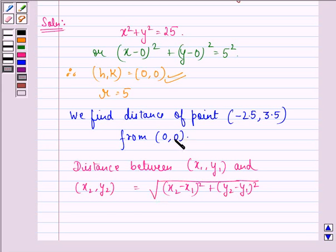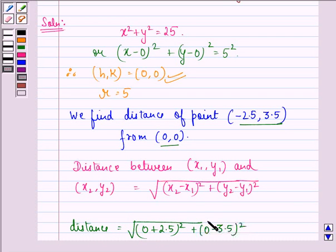Applying this on (0,0) and (-2.5, 3.5), we get distance equals √[(0+2.5)² + (0-3.5)²], where this acts as (x₁,y₁) and this acts as (x₂,y₂).